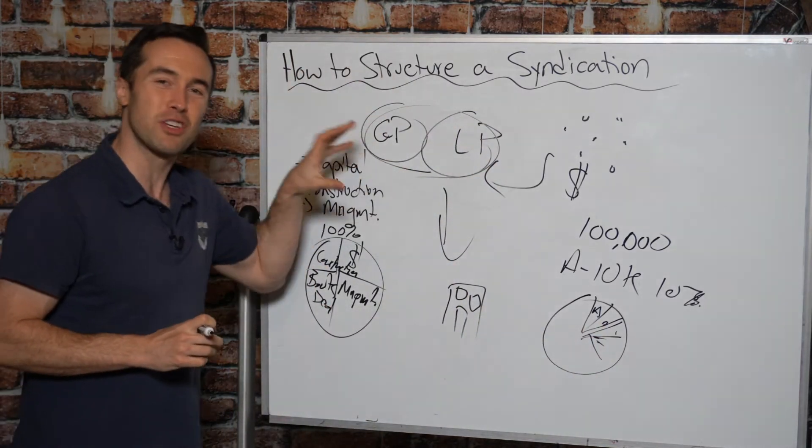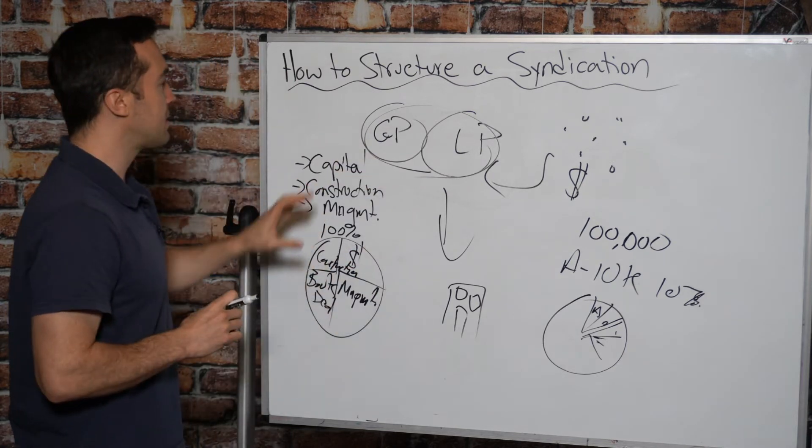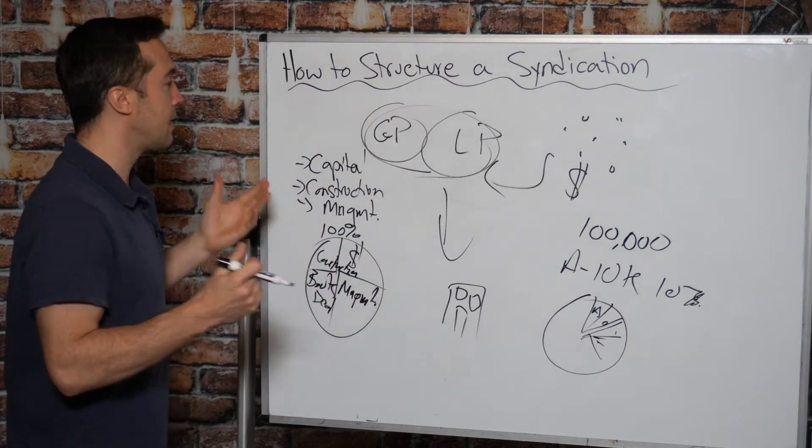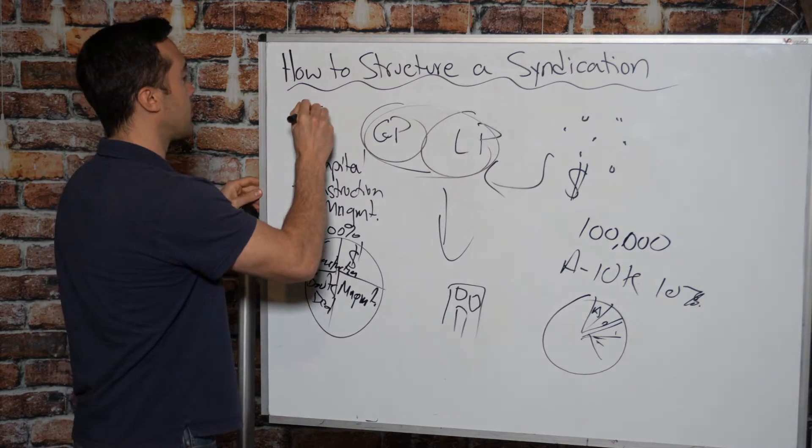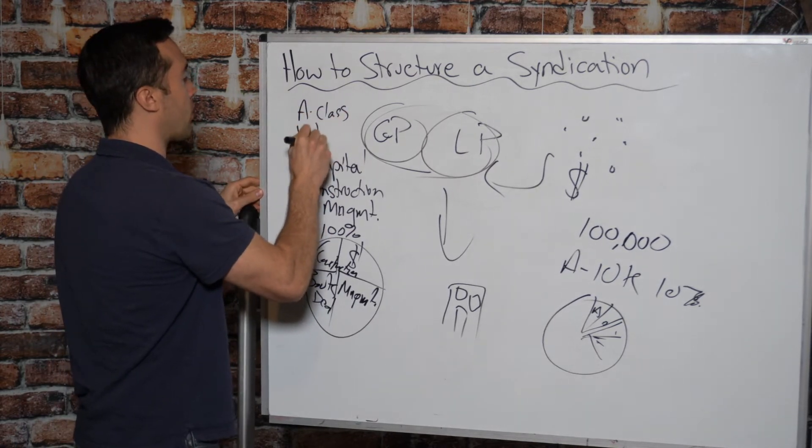The syndication is controlled through shares. So what happens is the general partnership is allocated typically class A shares and these shares have voting rights.